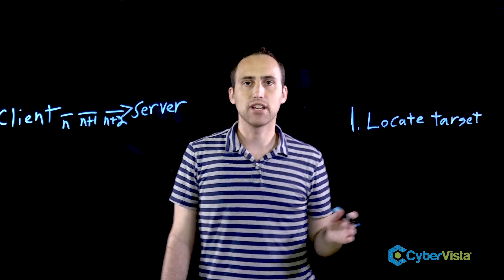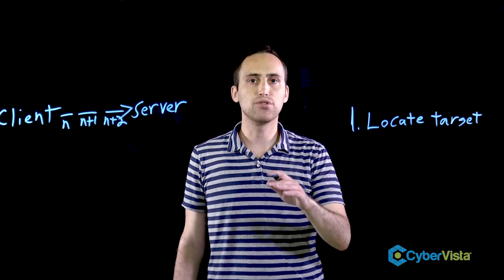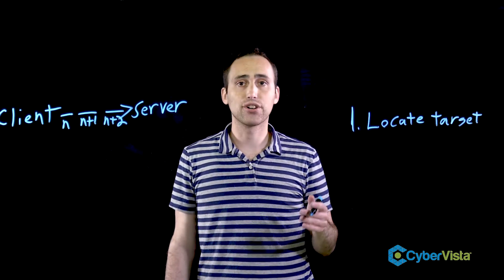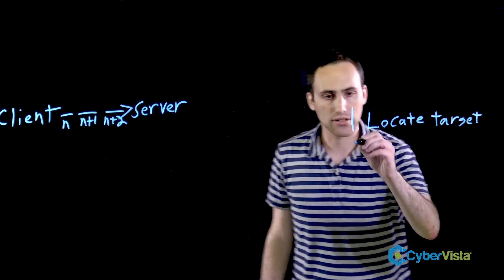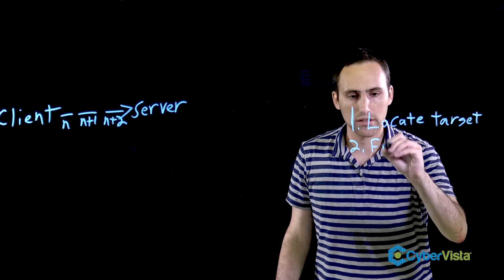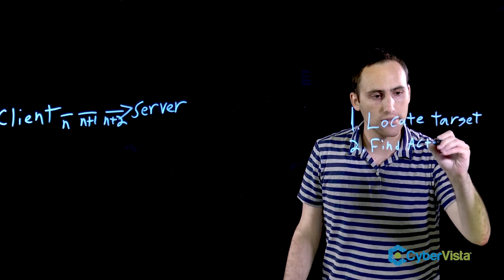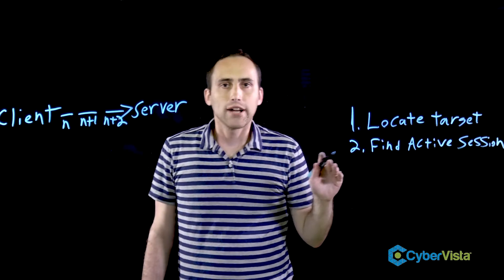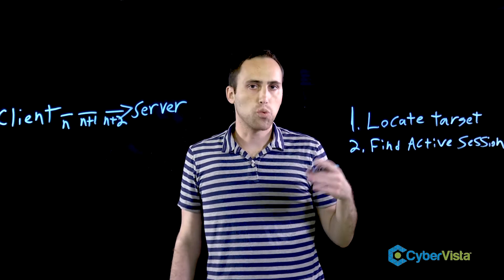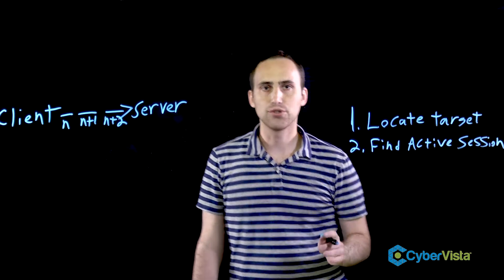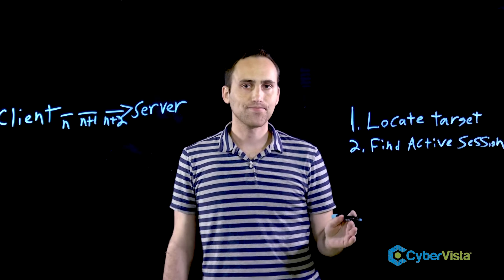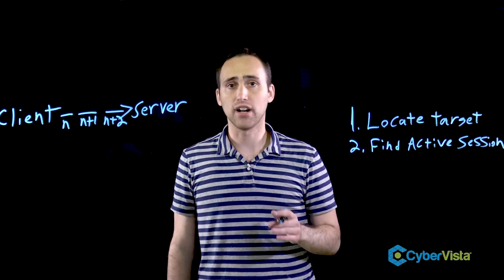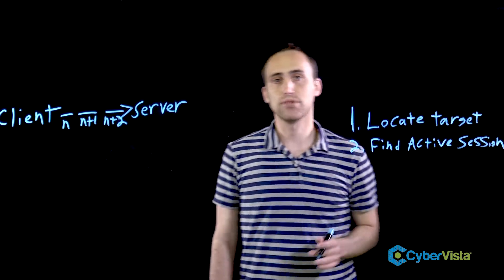Packet sniffing and port scanning software can be used to identify these kinds of vulnerabilities. Second, the attacker finds an active session. Hackers use software tools, such as Wireshark or T-Site, to spot these active sessions. Once the target and session have been selected, the hacker is ready to move on to step three: sequence number prediction.